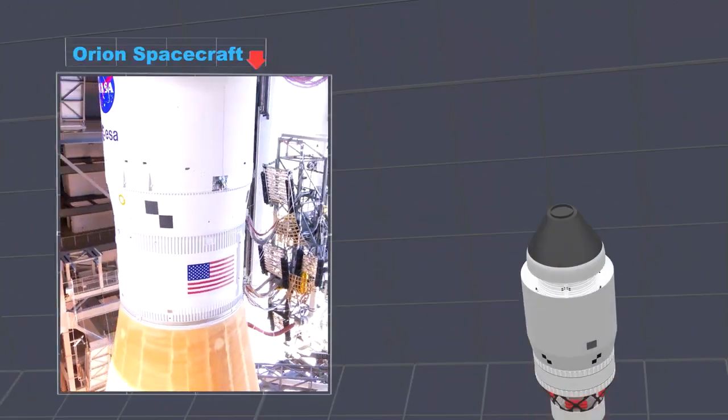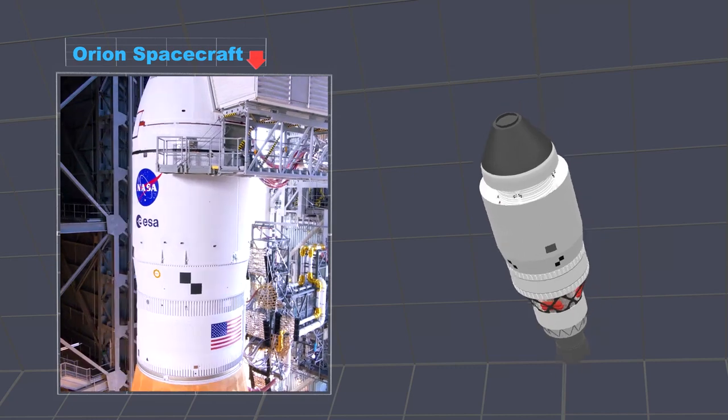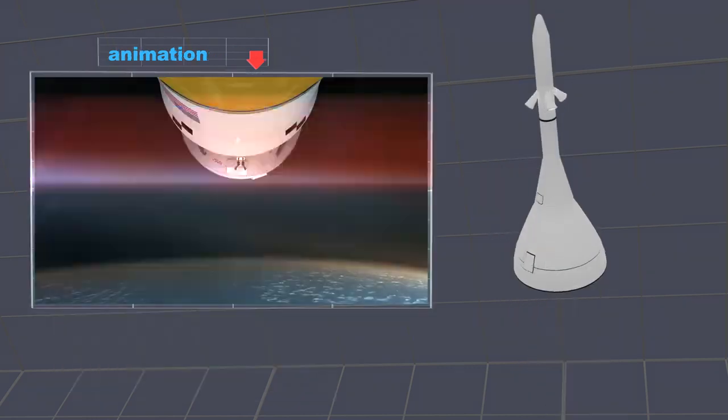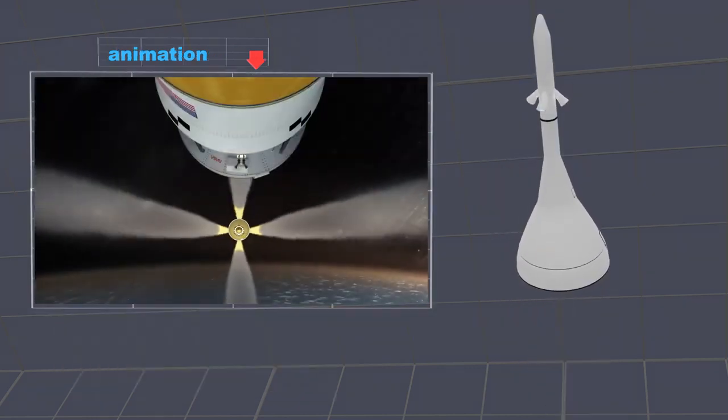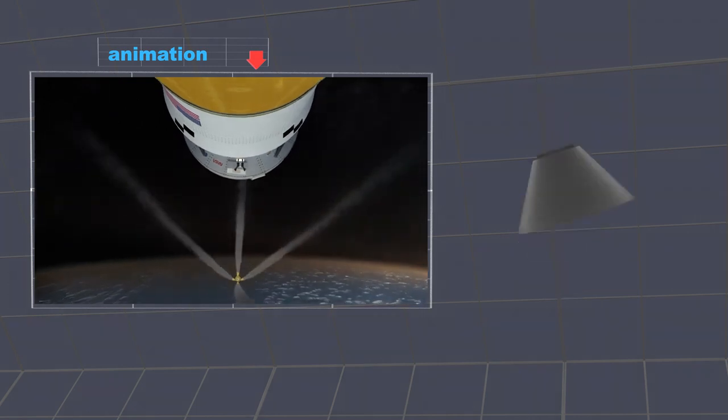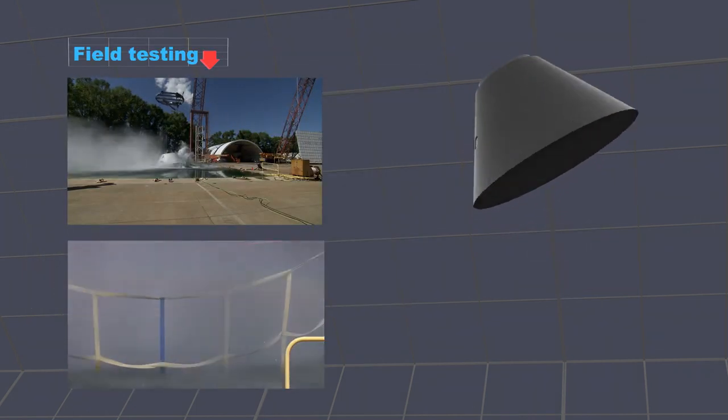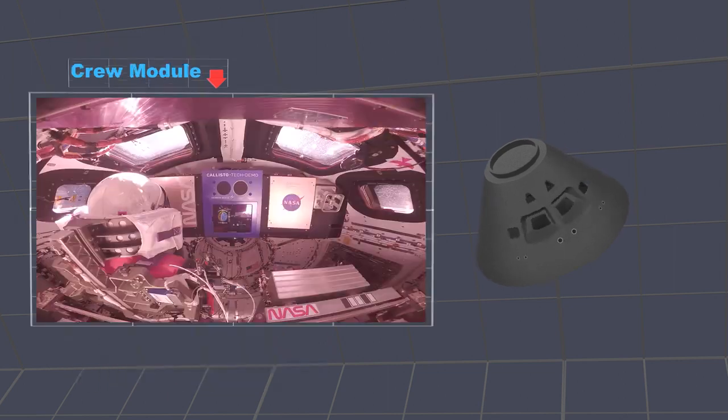Above the core stage is the Orion spacecraft. The launch abort system is a protection system for the crew during launch. The Orion crew module is where astronauts will go in future missions.